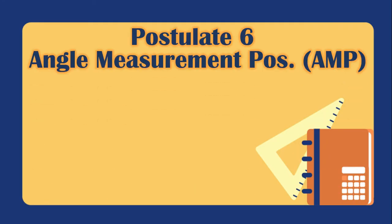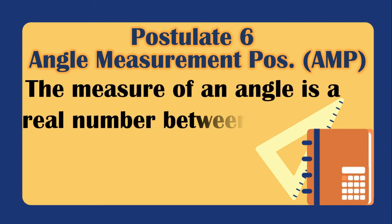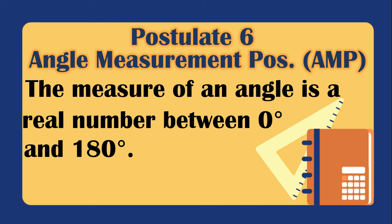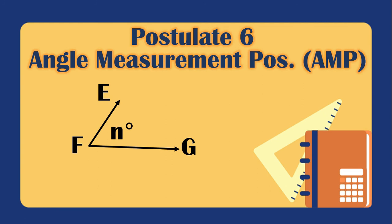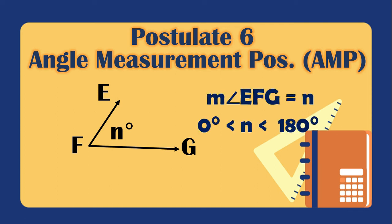Angle EFG has a measurement of N degrees, where N is between 0° and 180° — it is greater than 0° but less than 180°. Every angle measures only up to 180 degrees.